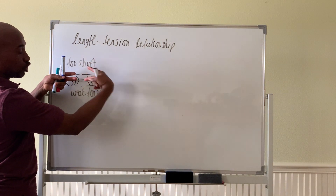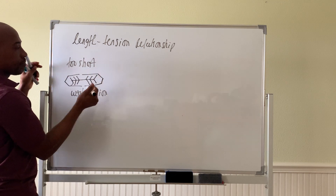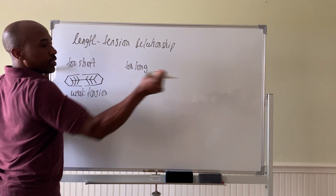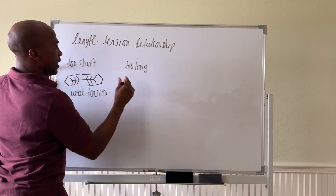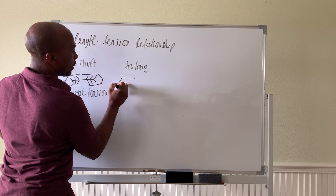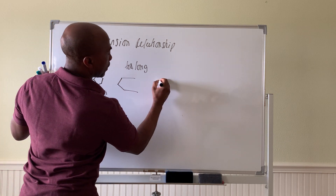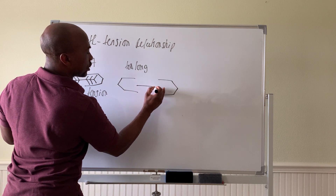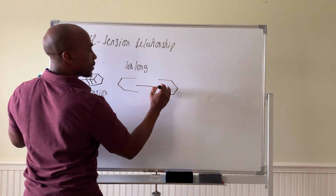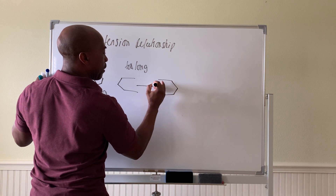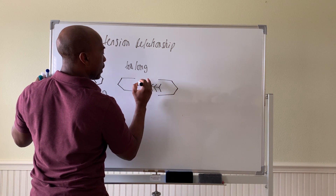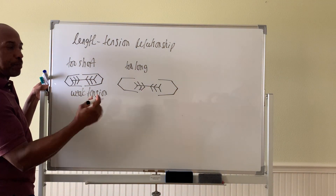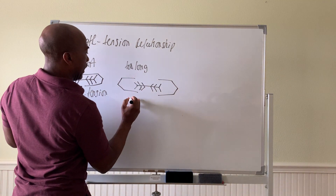There's not enough space to form cross bridges and pull to create tension before the sarcomeres are already hitting each other. That's bad. If the muscle is too long — overly stretched — and the sarcomeres are too far apart, the myosin does not have much overlap to catch and form cross bridges to create power.